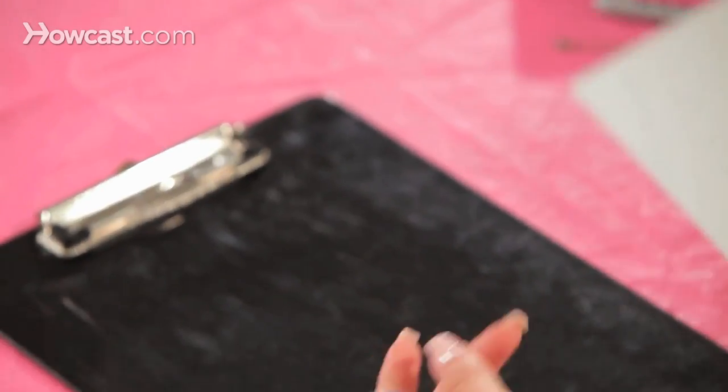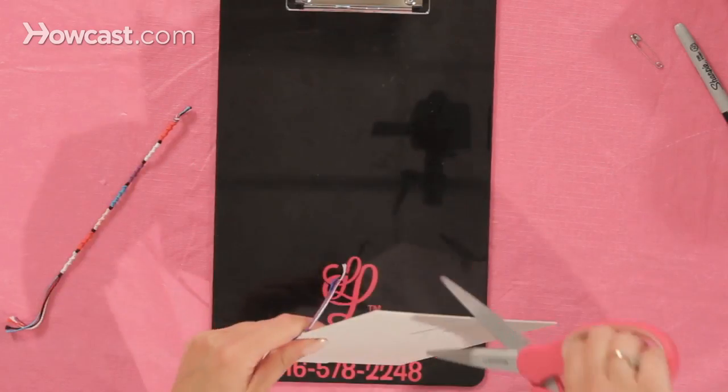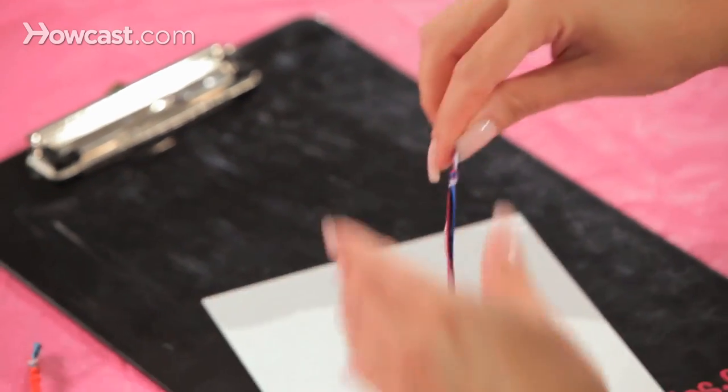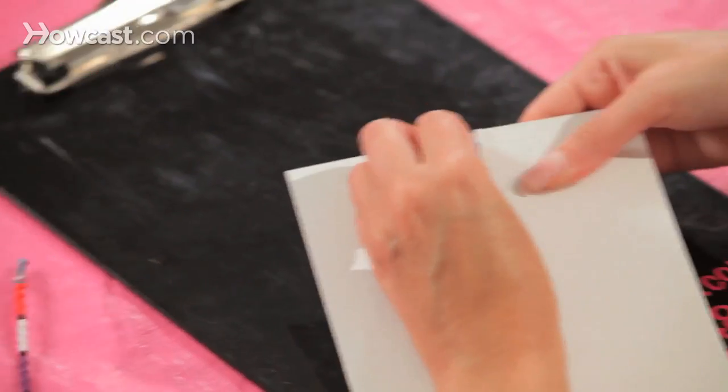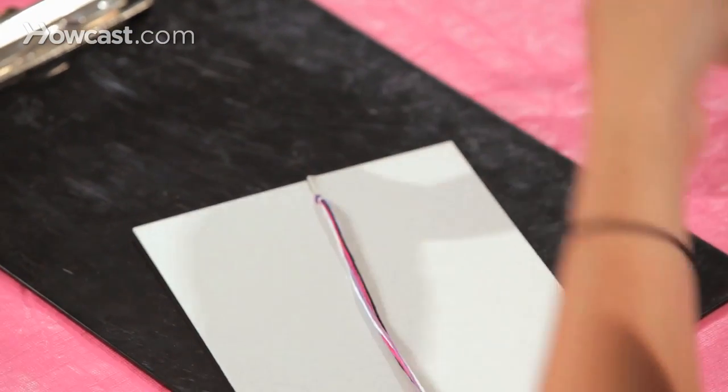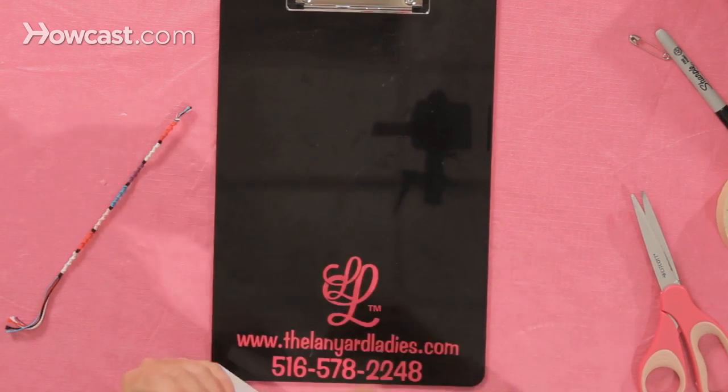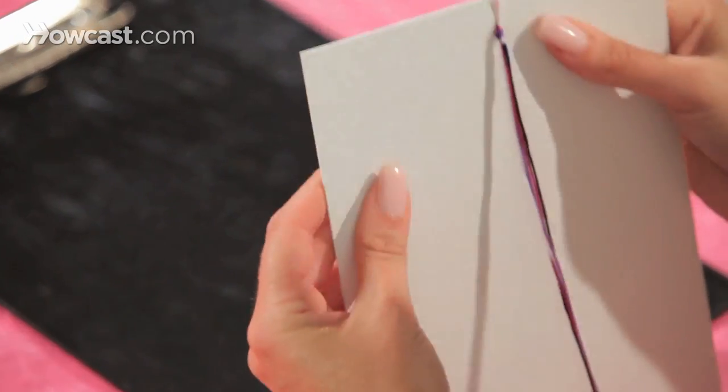You're going to take your cardboard, you're going to make a slit at the bottom and a slit at the top. You're going to put your strings into the top to secure it. Take a piece of tape, tape the back, and this way it'll hold it in place for you as you're working.